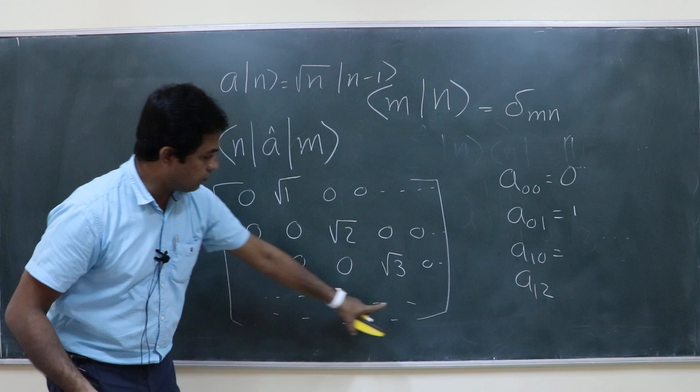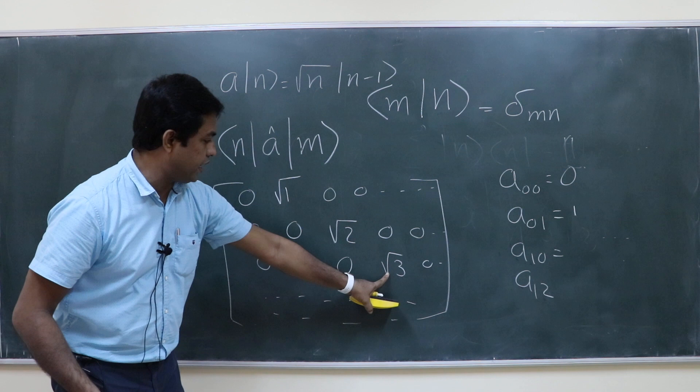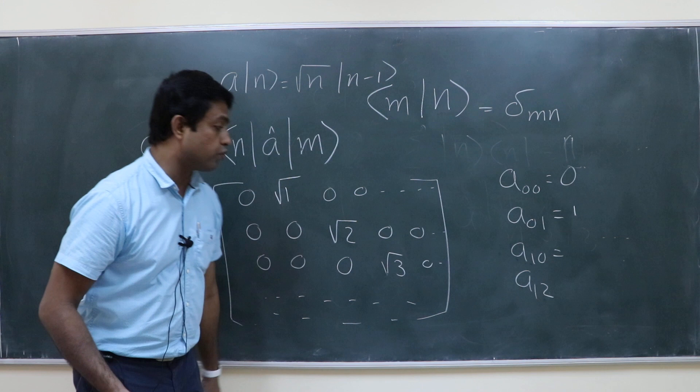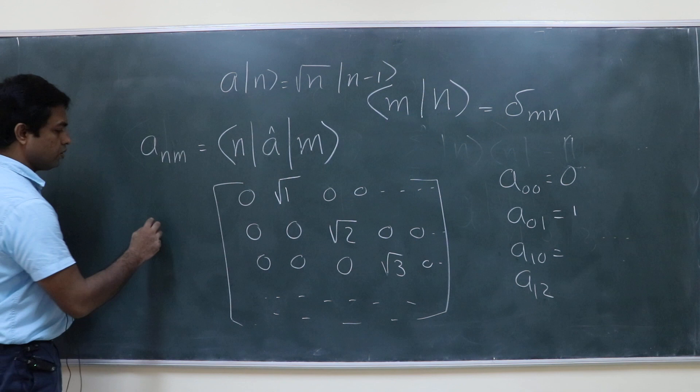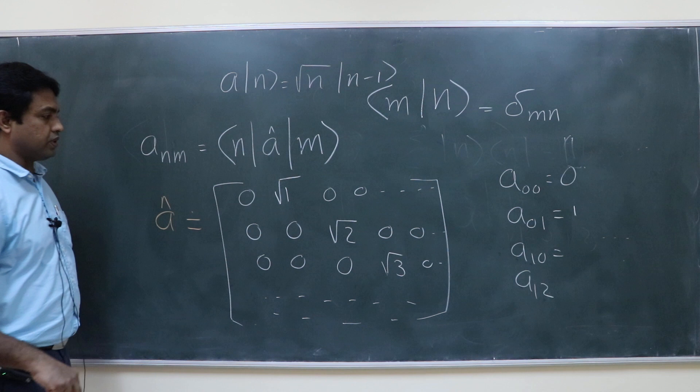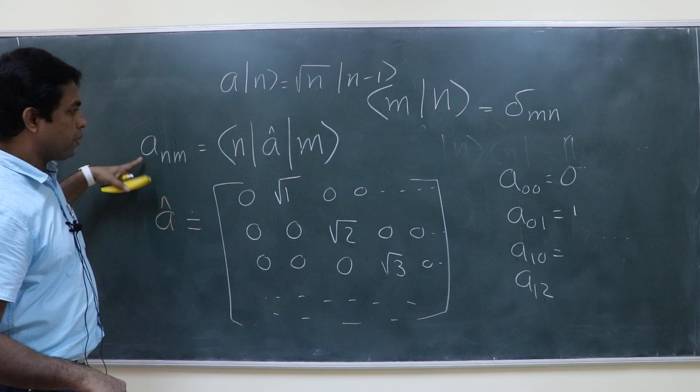The next non-zero element is a_23, which is root 3, then a_34 is root 4, and so on. This is the matrix representation of a in the ket n basis. Now can you quickly write down the matrix representation of a dagger?